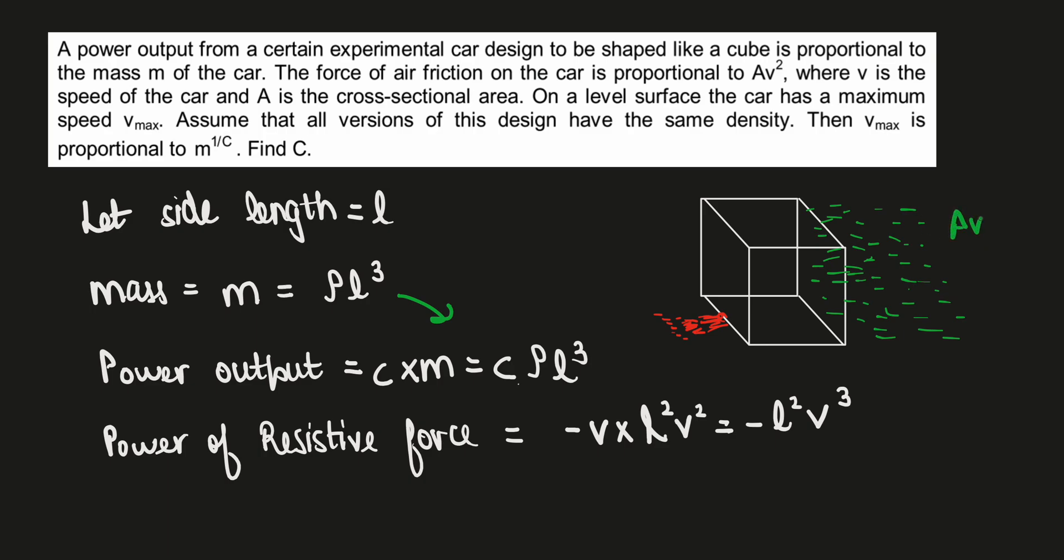Now there is a resistive force acting on it which is Av². And A, as I know, is l², so it would be l²v². The next point that we have to consider is that I am calculating the power of resistive force. Basically, force is acting this way and the body is moving towards the right, so the power would be -v into l²v², which is -l²v³.